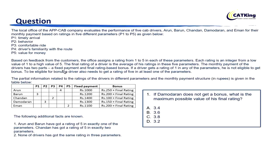Based on feedbacks from the customers, the office assigns a rating from 1 to 5 in each of these parameters. Each rating is an integer from a low value of 1 to a high value of 5. The final rating of a driver is the average of his ratings in these 5 parameters. The monthly payment has two parts: a fixed component and a final-rating-based bonus. If a driver gets a rating of 1 in any of the 5 parameters, he is not eligible to get a bonus. To be eligible for a bonus, a driver also needs to get a rating of 5 in at least one of the 5 parameters.